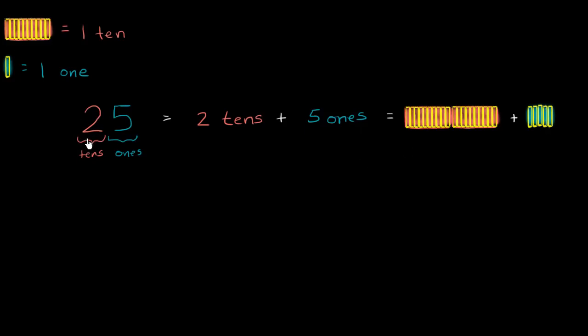25 is two tens and five ones. This two is in the tens place, the five is in the ones place. So two tens plus five ones. So you could view this as two groups of ten plus five ones right over here.